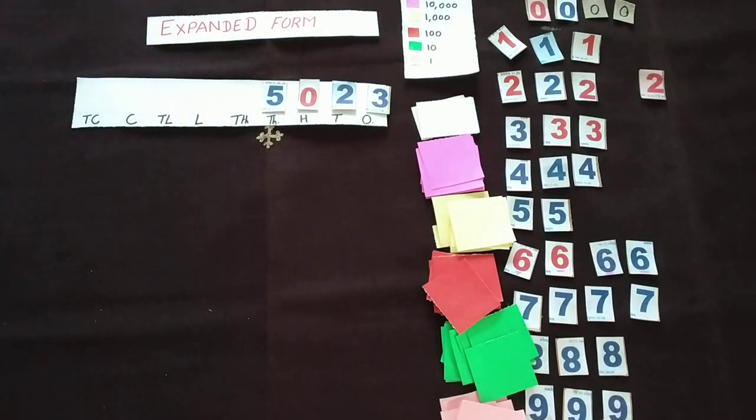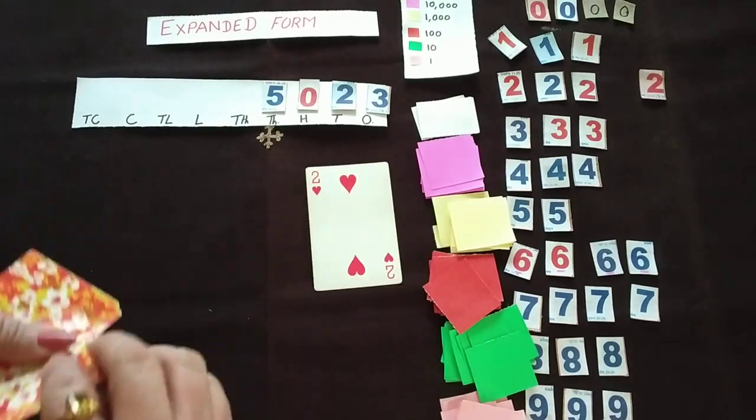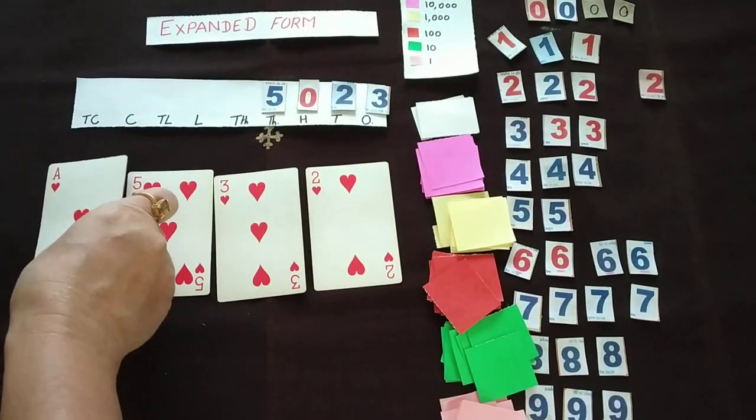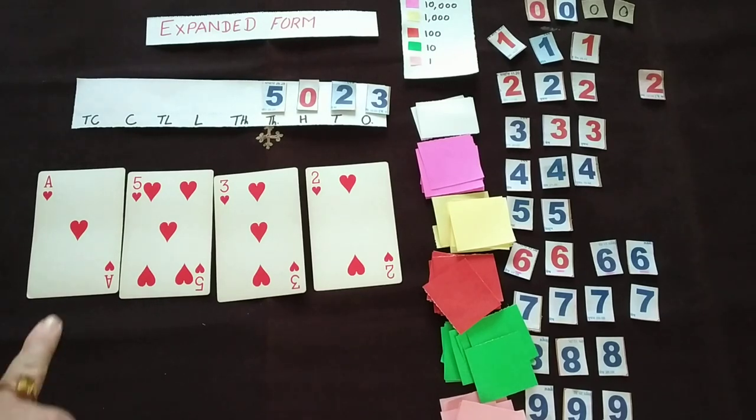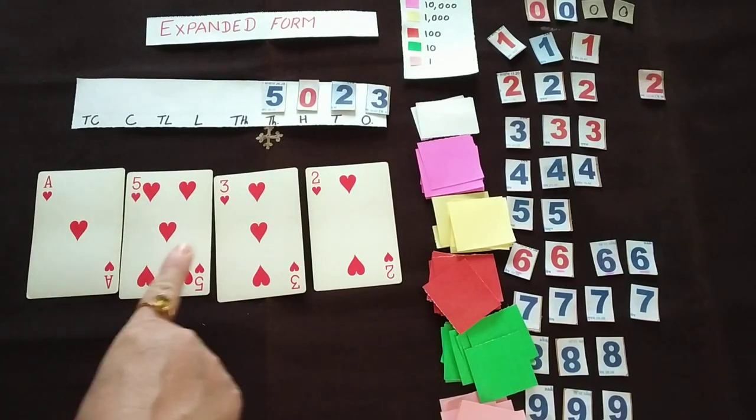So you can reshuffle these cards. Suppose you want to create here a 4-digit number. So just keep 4 cards. So now what is the number? 1532.